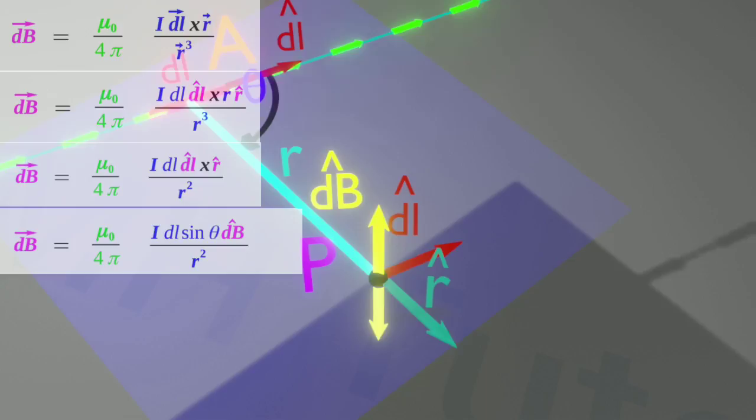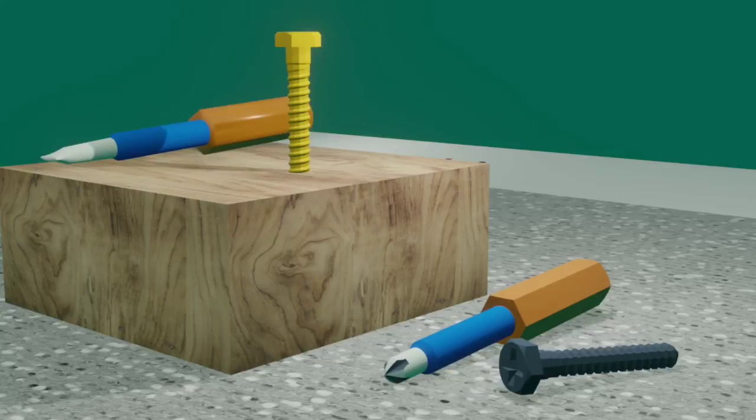So, we understand that cap dB is perpendicular to this plane. But, to which direction? Upwards? Or downward?